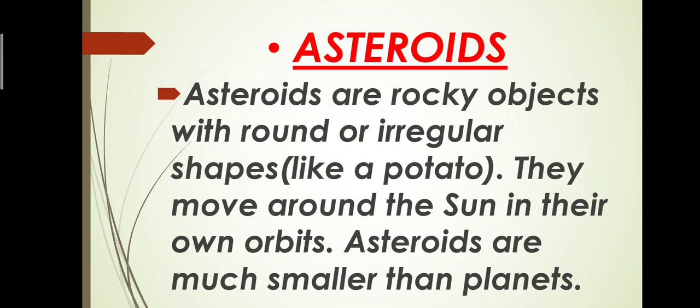Now moving on towards the first celestial body which is asteroids. What are asteroids? Asteroids are rocky objects with round or irregular shapes. Irregular means most asteroids are like a potato shape. They can be up to several hundred kilometers across but most are much smaller.